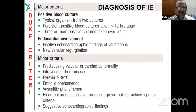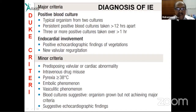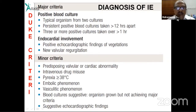The minor criteria include pre-disposing valvular or congenital cardiac anomalies, intravenous drug abuse, fever, embolic manifestations, vascular phenomena, blood culture suggestive of an organism but not meeting major criteria, and echocardiographic findings suggestive but not confirmatory of vegetation.